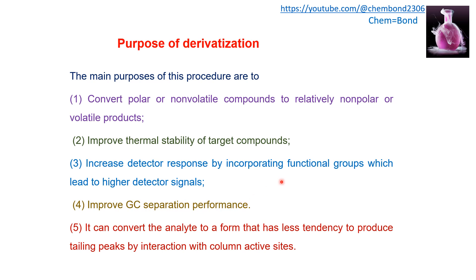Derivatization also improves GC separation performance. The derivatized analyte may have significantly different properties from one another in terms of polarity and boiling point, which causes good separation on GC. It can also convert the analyte to a form that has less tendency to produce tailing peaks by interacting with column active sites. If polar hydrogen groups are present, they will cause secondary interactions with column active sites, leading to a tailing effect. Replacing the active hydrogen with a non-polar group minimizes secondary interaction and peak tailing.